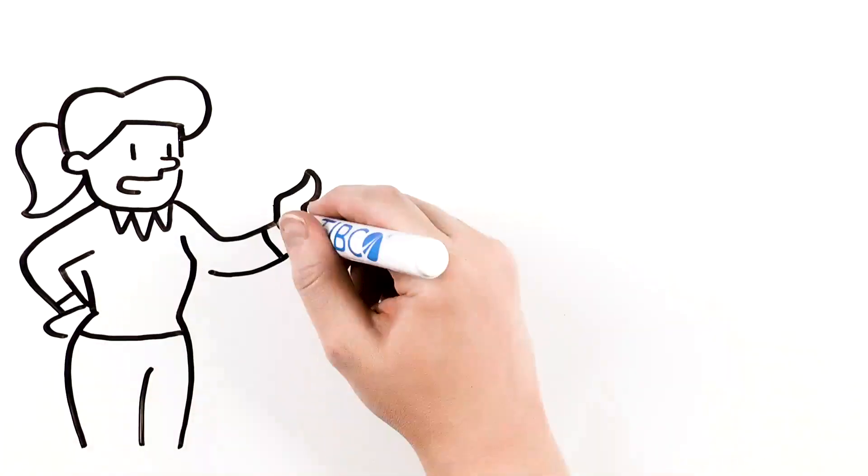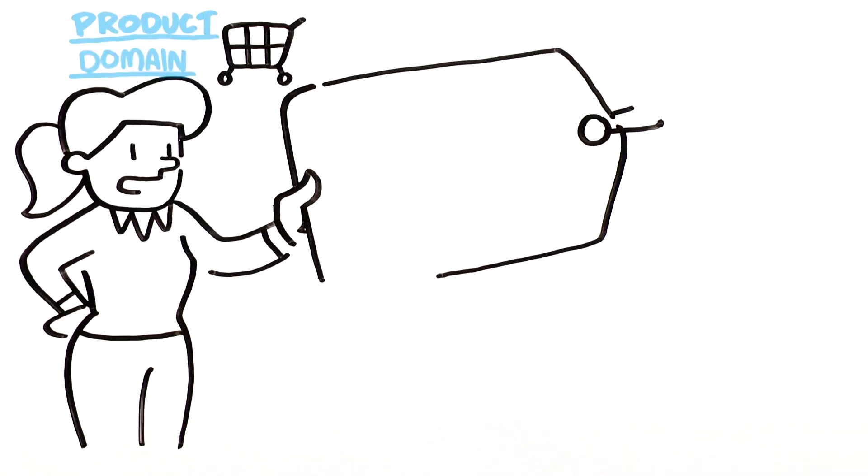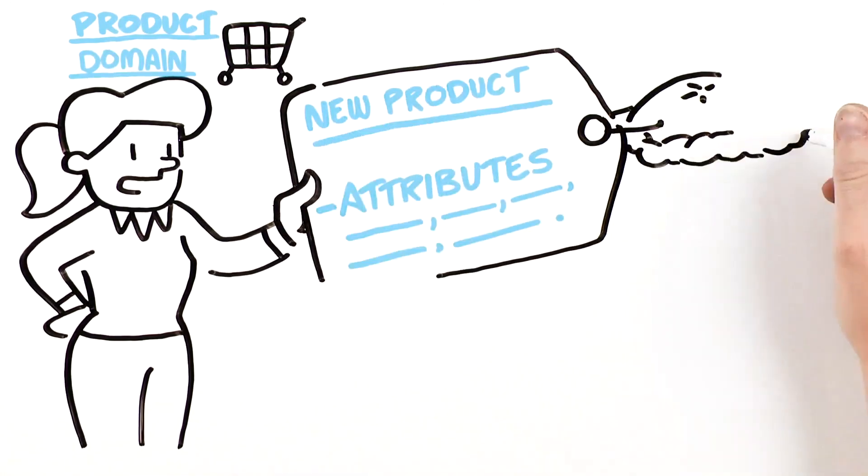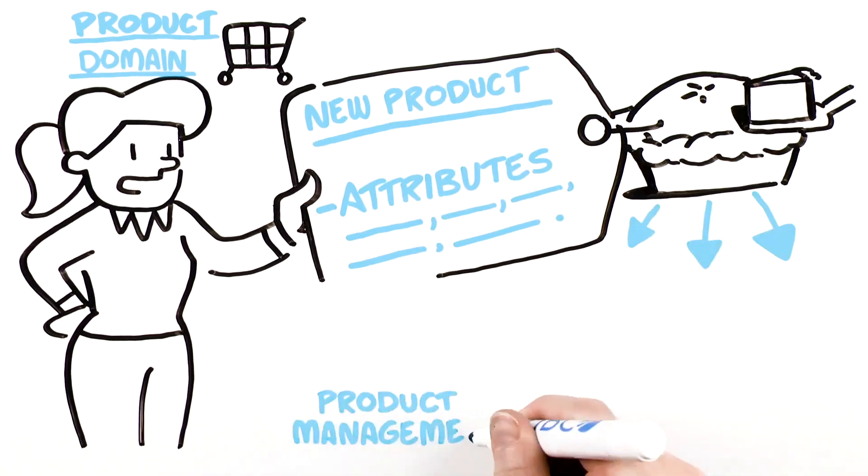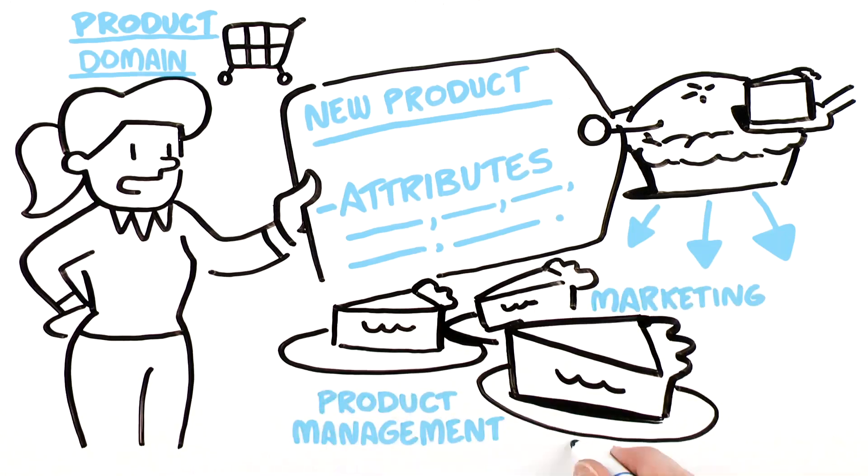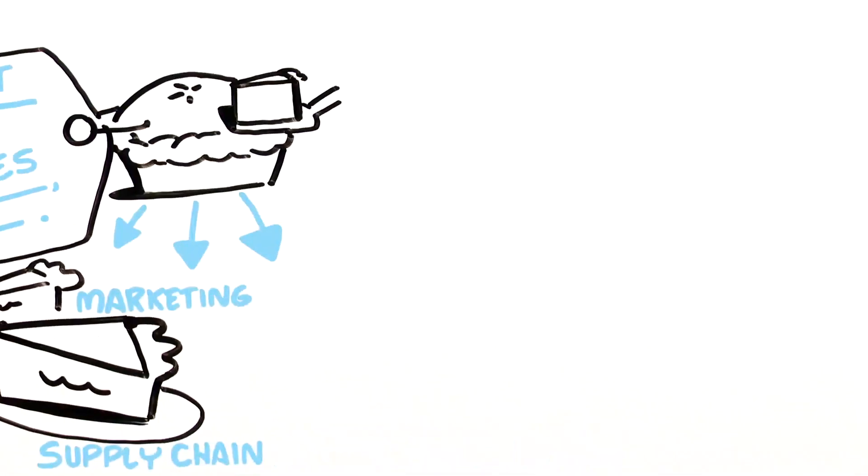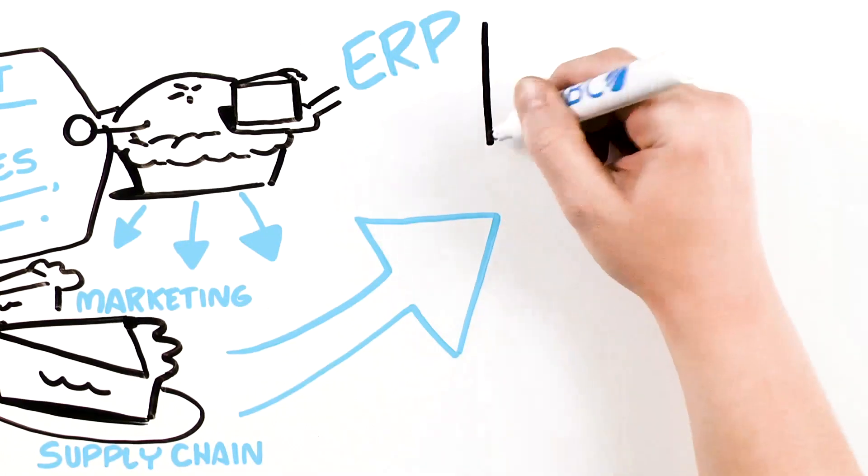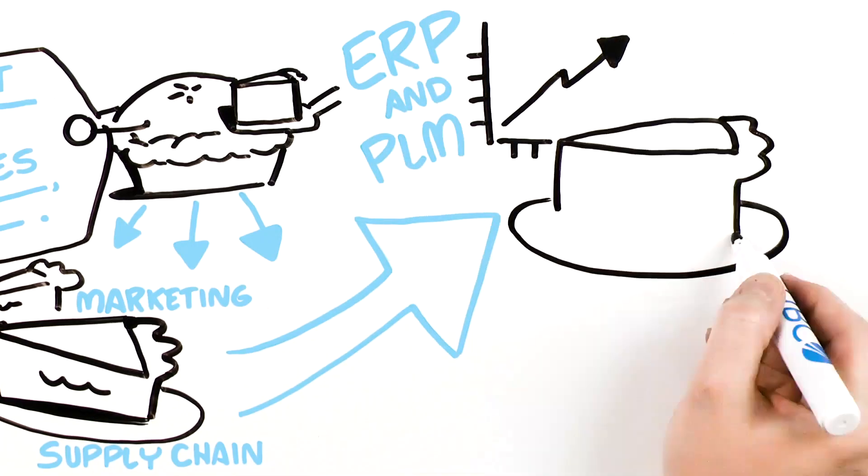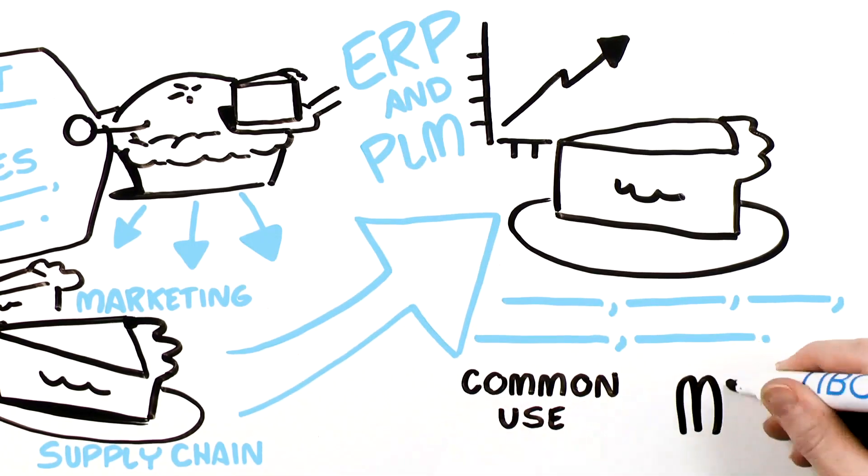Now let's look at each domain starting with the product category. Identifiers and attributes of the new product are often shared among product management, marketing, and supply chain teams. Then that information is shared with systems such as ERP and PLM, a common use case for MDM.